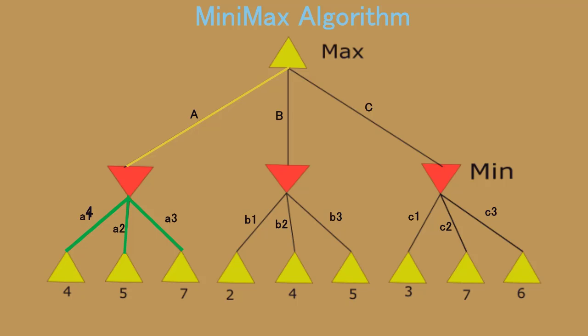Here we will expand the b node from max, which gives us 3 values: b1, b2, b3. B1 is 2, b2 is 4, and b3 is 5. So 2 is the smallest.